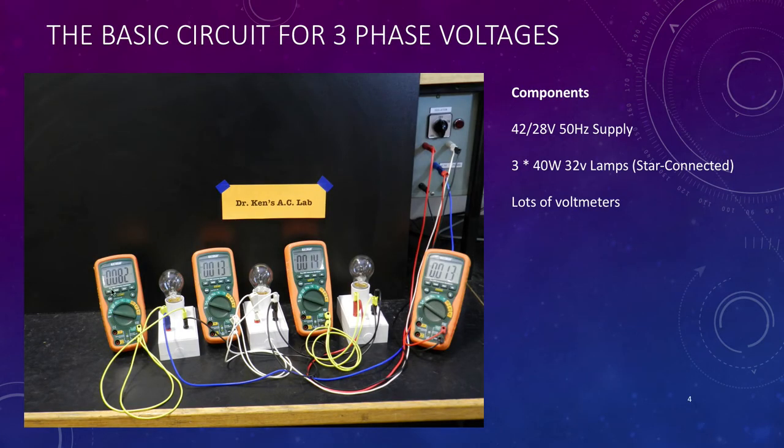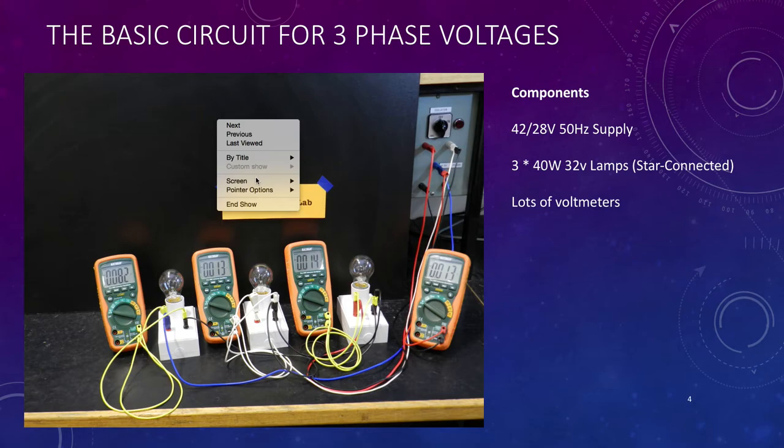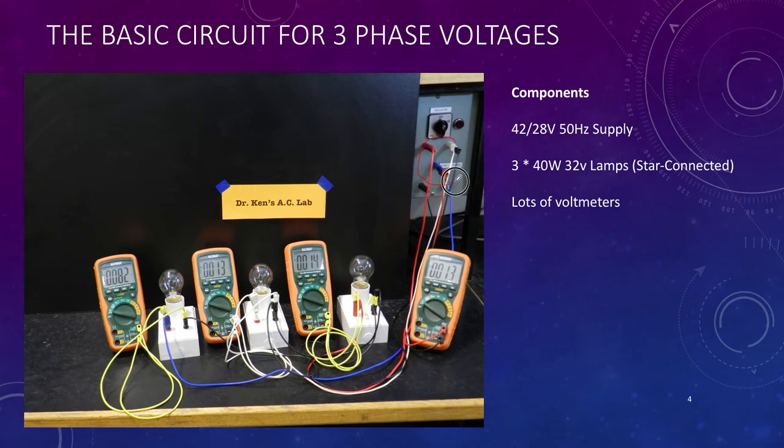So here's our three phase setup. Let me turn on the pen. So you can see here our three phase supply, and you can see this time the neutral's connected. So again, we've got our lamps across A phase, B phase, and C phase. We have the neutrals all looped together into a star point.